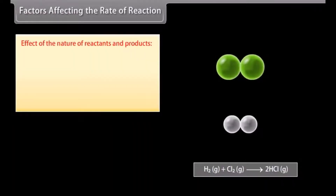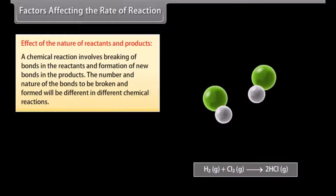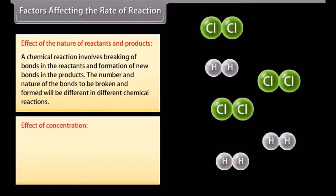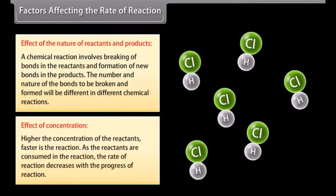Factors affecting the rate of a reaction. Effect of the nature of reactants and products: a chemical reaction involves breaking of bonds in the reactants and formation of new bonds in the products. The number and nature of bonds to be broken and formed will differ in different chemical reactions. Effect of concentration: higher the concentration of the reactants, faster is the reaction. As reactants are consumed, the rate of reaction decreases with the progress of reaction.